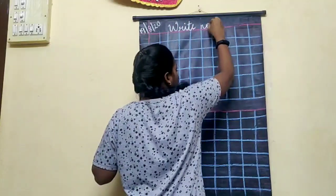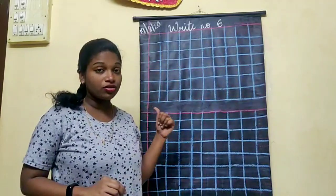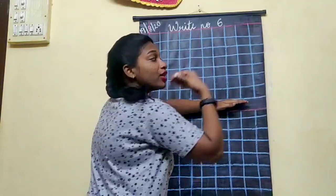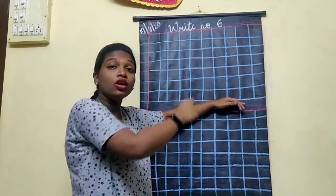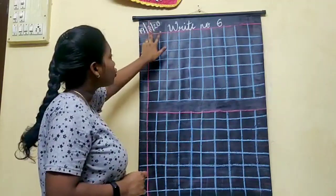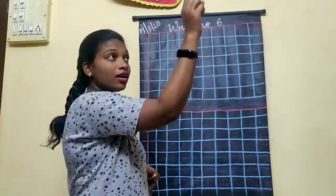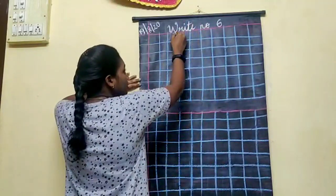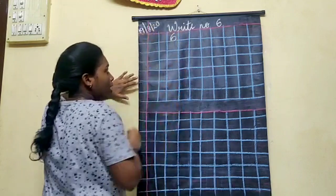Write number six. Can you see the red line on your book? You are going to leave two square boxes and then write number six. It's curve and then curve — it's like a C. Then you have to put a circle and stop. That is number six.